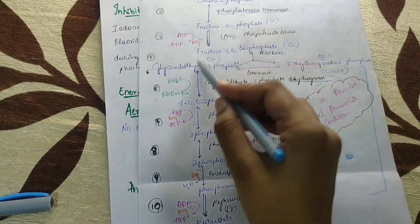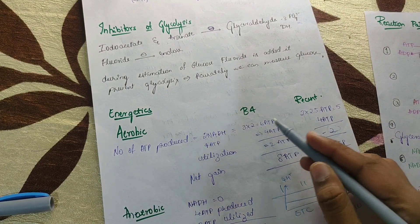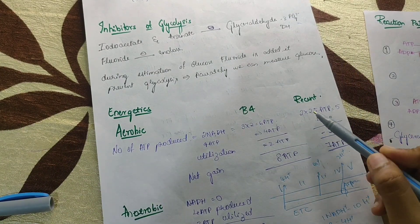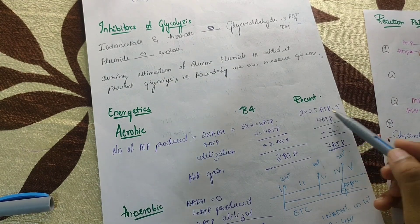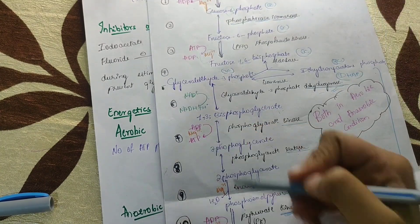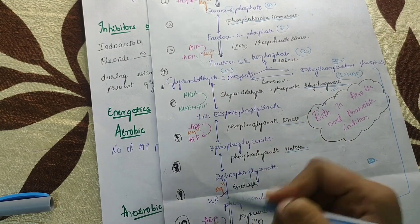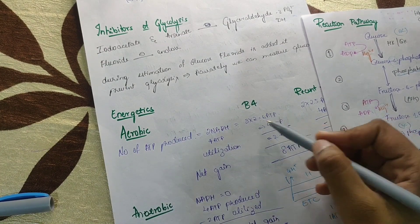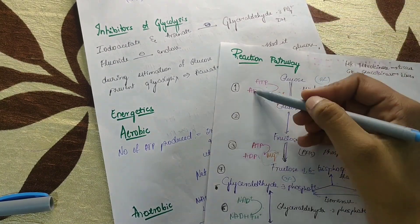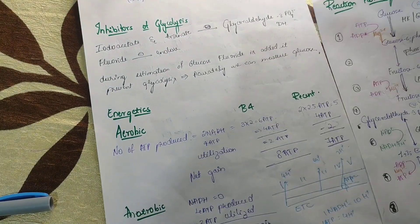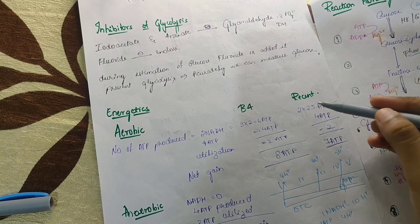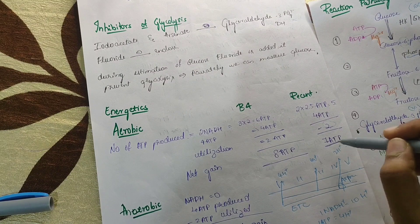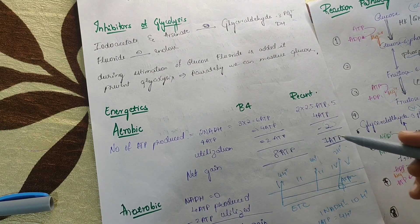Since the reaction takes place twice, 2 NADH are produced. Previously, 1 NADH was considered equal to 3 ATPs, so 2×3=6 ATPs from NADH. With the recent update, 2×2.5=5 ATPs from NADH. ATP directly produced: 1 and 2 at specific steps, each taking place twice, so 2×2=4 ATPs. Total: 4 (direct) + 5 (from NADH) = 9, minus 2 utilized = net 7 ATP in aerobic condition (recently updated from the older value of 8 ATP).